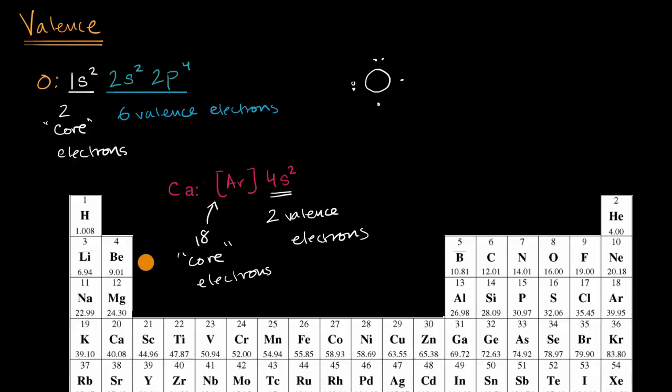So the big picture here is one of the values of electron configuration is to think about which of your electrons are most likely to react. Those are your valence electrons. In most cases, your valence electrons are going to be your outermost electrons. They're going to be the electrons in that outermost shell. Generally speaking, if you're talking about elements that are in the S block or the P block, you can think about how many valence electrons they have just based on what column they're in.